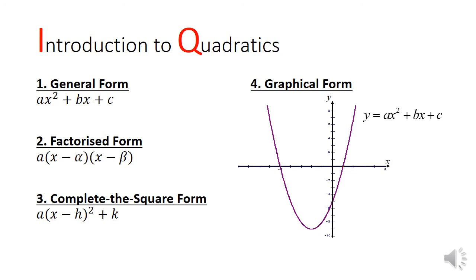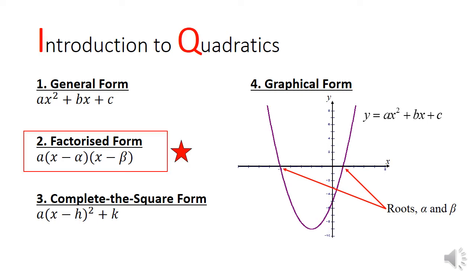Quadratics can also be represented graphically. The roots alpha and beta can be seen graphically as the x-intercepts of the quadratic function, which is where the curve meets the x-axis. Today, we'll be looking closer at the factorized forms and how we can play with the roots of a quadratic using Vieta's formulas.